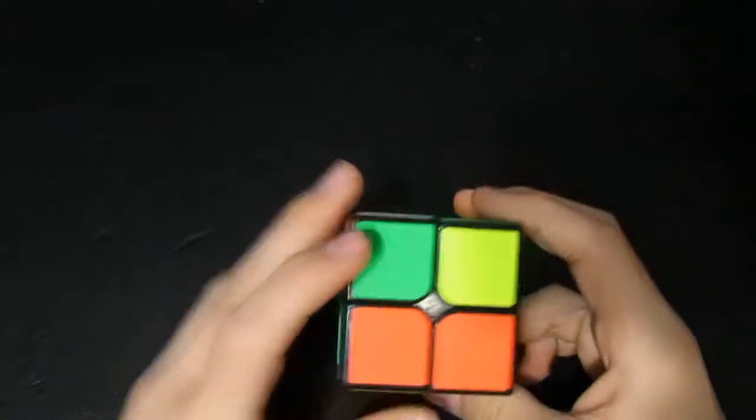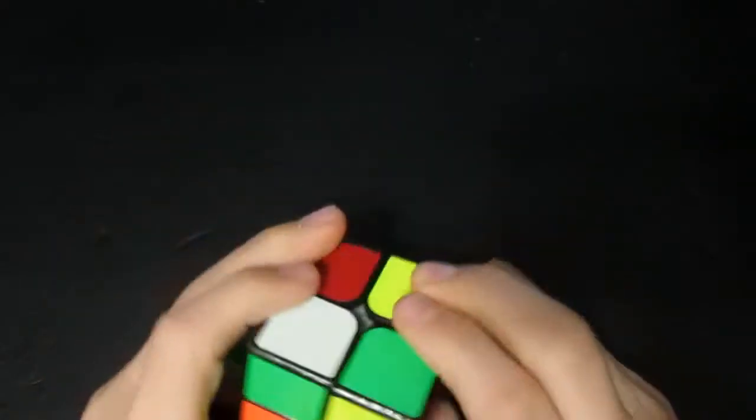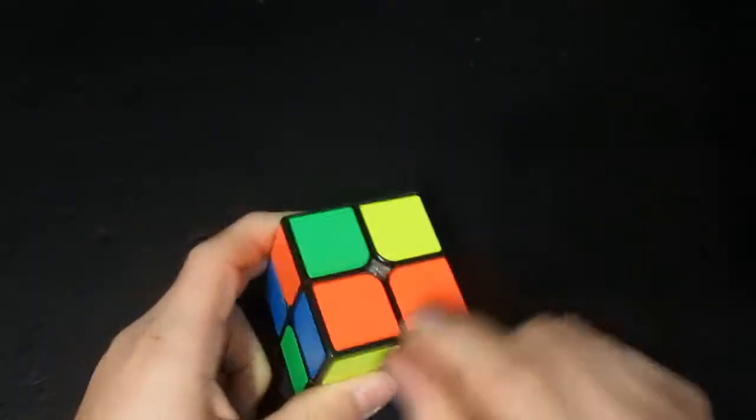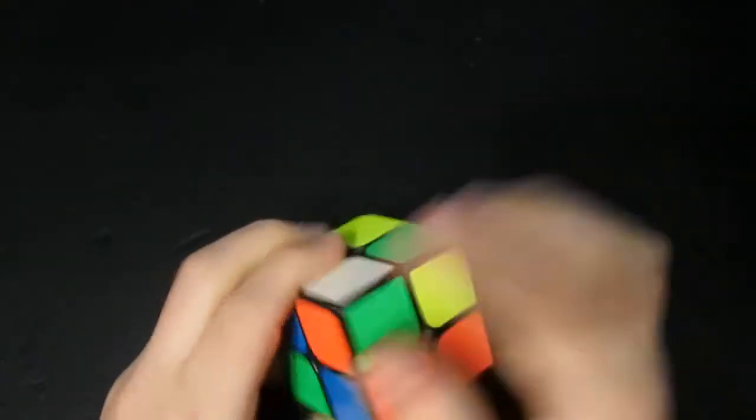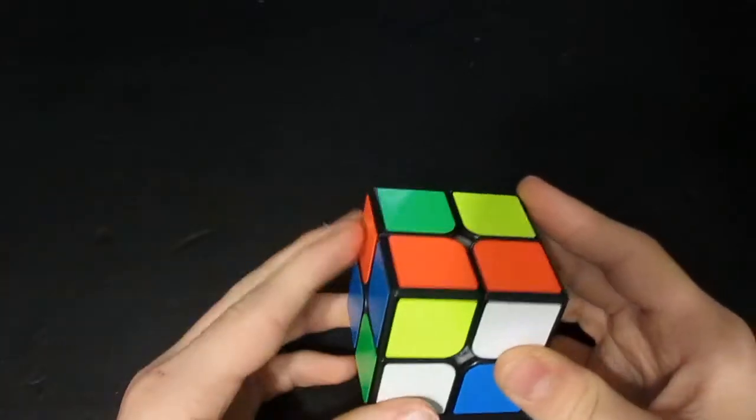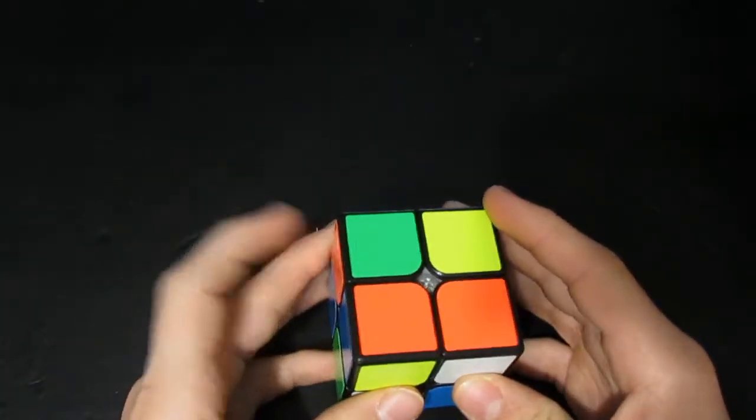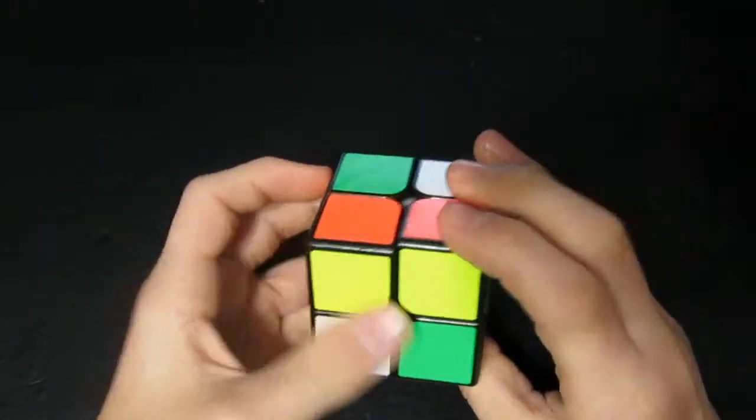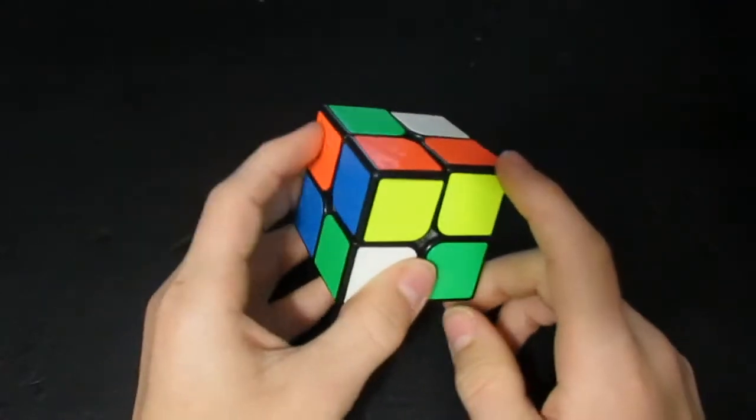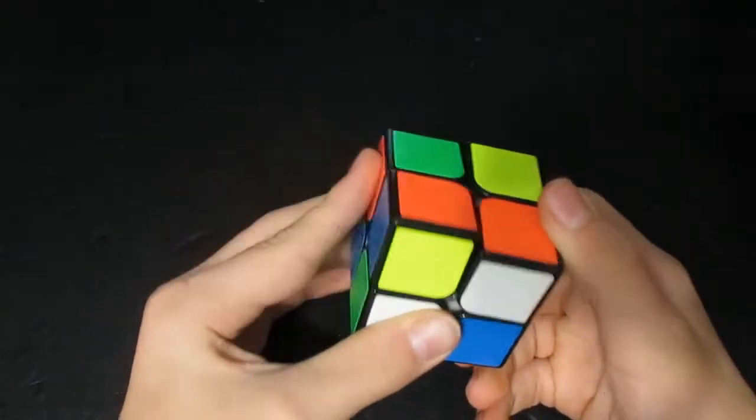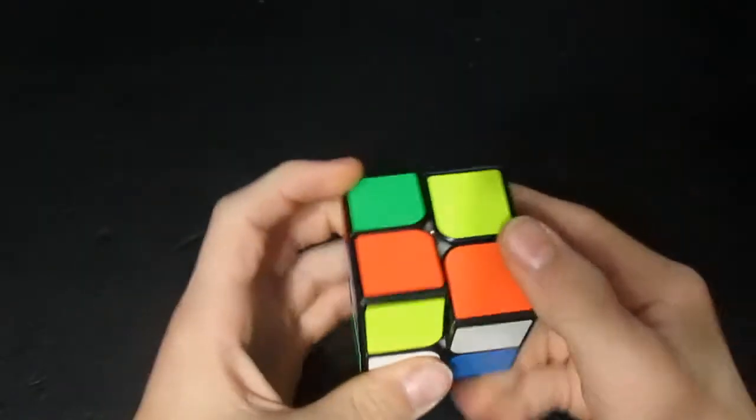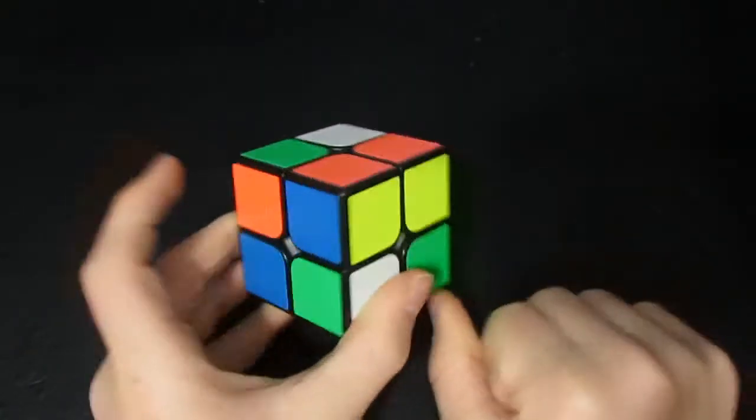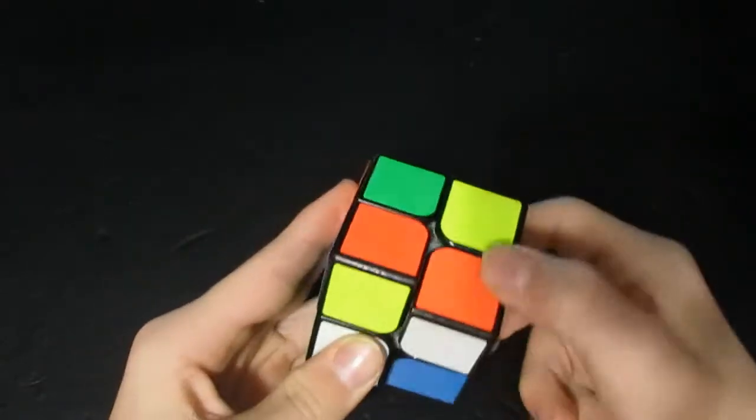All right, so what we want to do is take this piece and put it where it needs to go. So, this is the orange, green, and white piece. If this is correct, then this piece needs to go here. So, what we do is we take the piece that's here and we move it down to here. This is going to be your buffer position, which is basically the position where you solve the piece. You put this down here, because once you do the swapping algorithm, it'll swap this piece and this piece, so that when you bring it back up, it'll be solved.